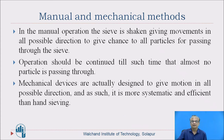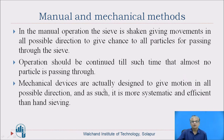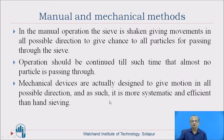In the manual operation, the sieve is shaken giving movements in all possible directions to give chance to all particles for passing through the sieve. The operation should be continued until almost no particle is passing through — generally 15 to 20 minutes are sufficient. Mechanical devices are designed to give motion in all possible directions and are more systematic and efficient than hand sieving. When a small quantity is to be sieved, manual sieving can be used; for large quantities or coarser grades, mechanical devices must be used. For sand also, you can use mechanical devices.